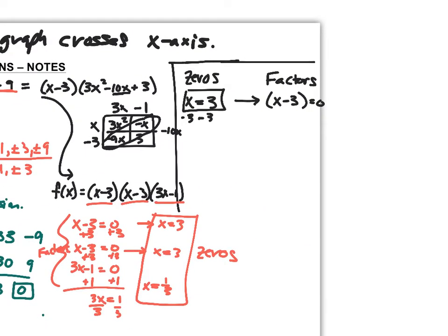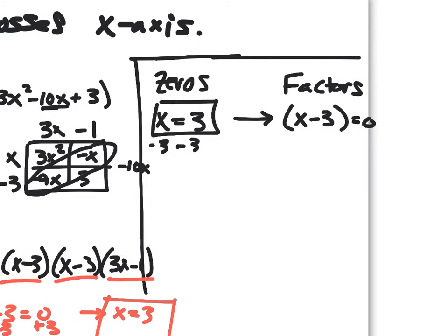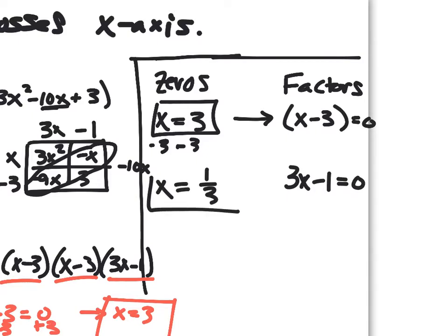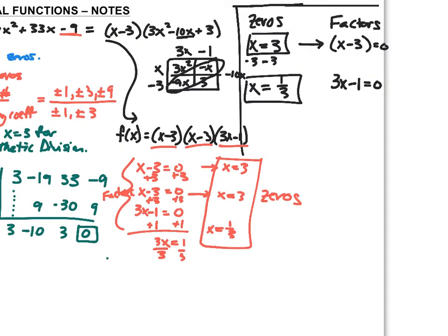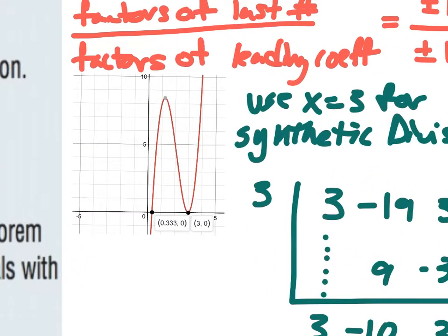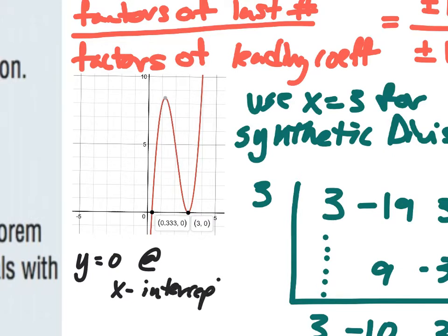Now the question is: why do we set each factor equal to zero to find the zeros? If you go back to the graph, when x is 1/3 (or 0.3 repeating), the y-value is zero. Same thing with x = 3 — the y-value is zero. At x-intercepts, the y-value equals zero, and that's why we set each of those factors equal to zero.